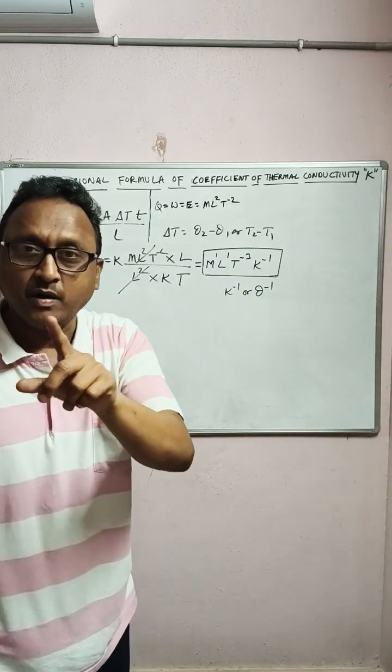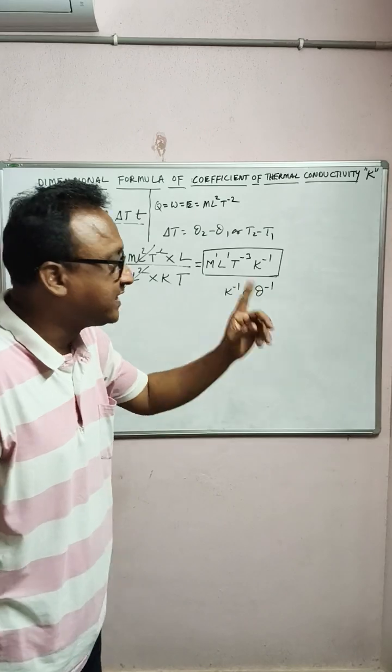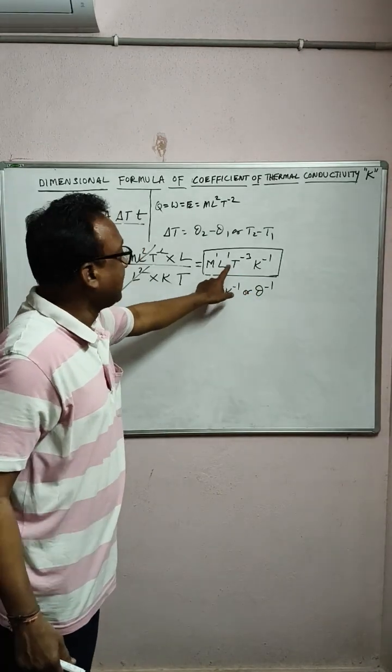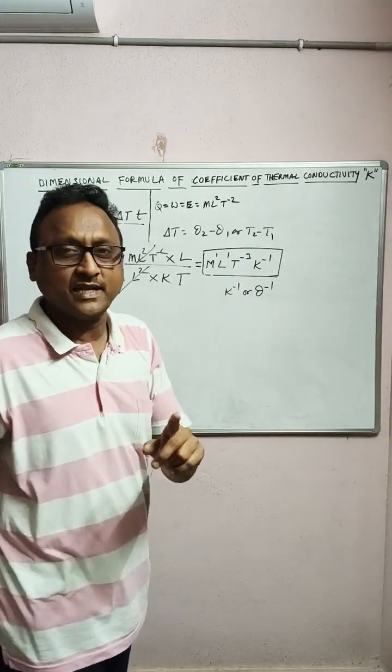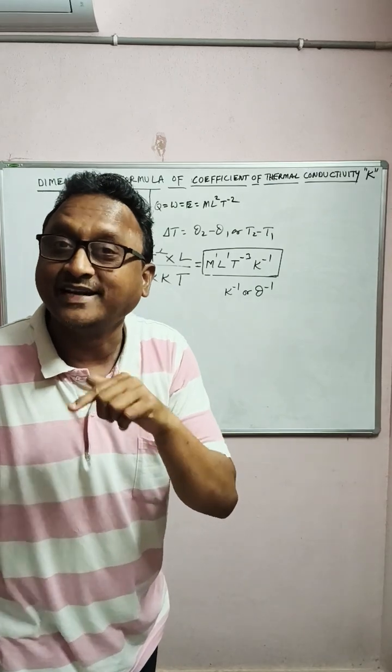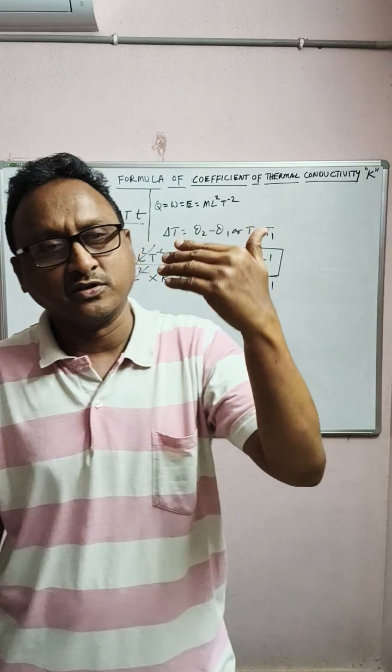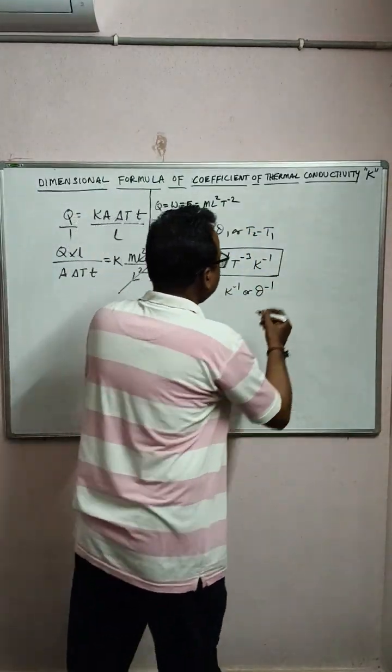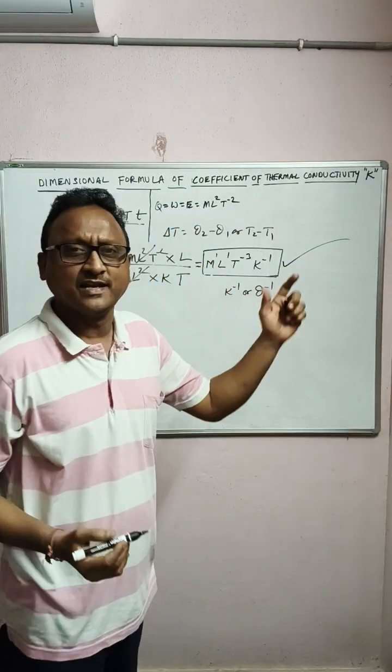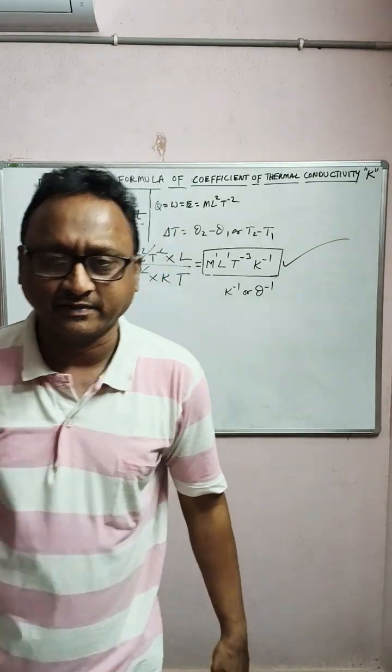Therefore, the dimensional formula of coefficient of thermal conductivity: either you can write M¹L¹T⁻³K⁻¹ or θ⁻¹. Some books follow temperature θ also. That is also right and this is of course very much right. So that is the dimensional formula of coefficient of thermal conductivity.